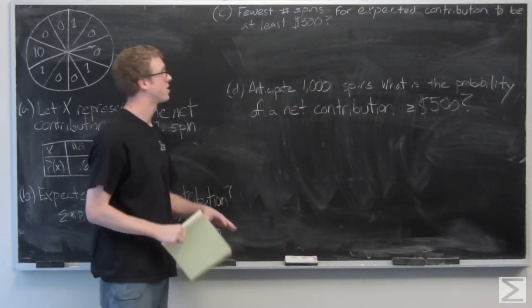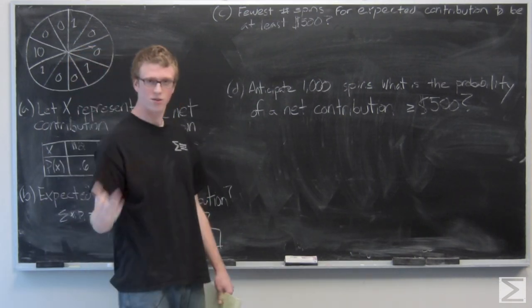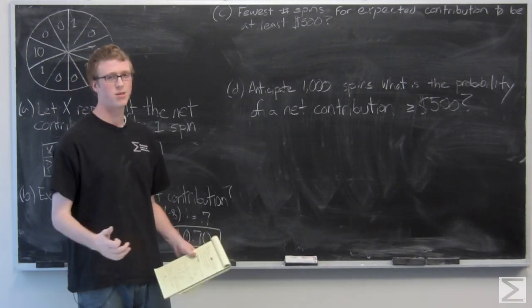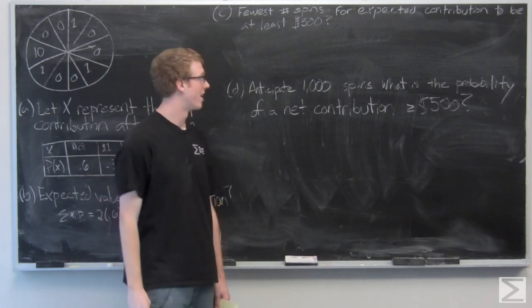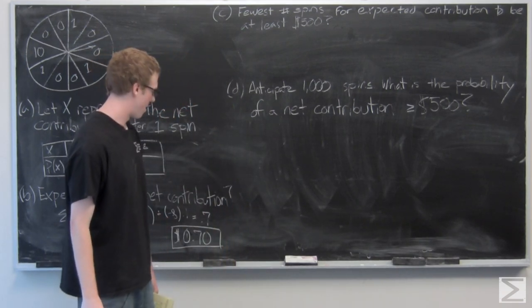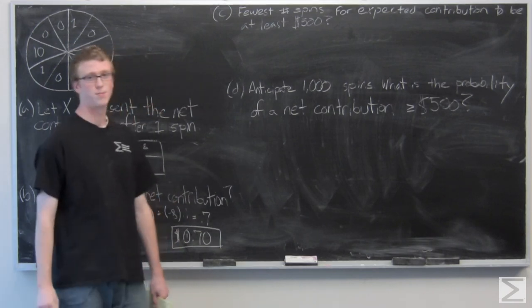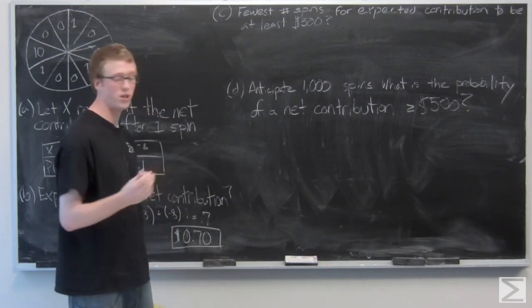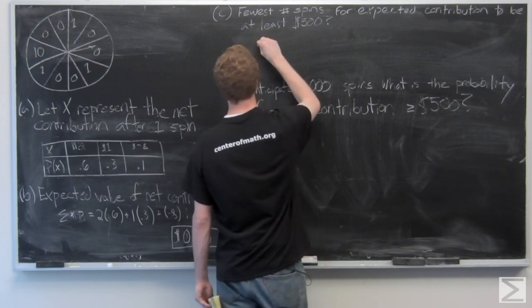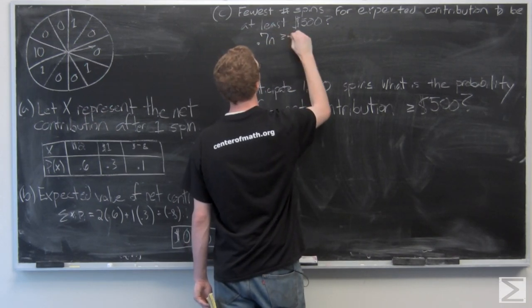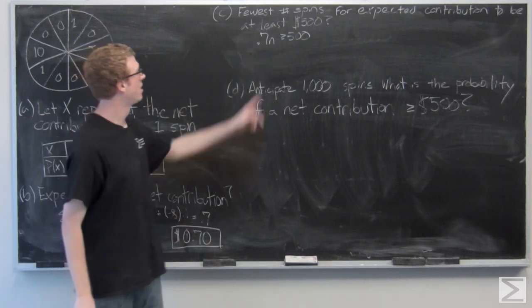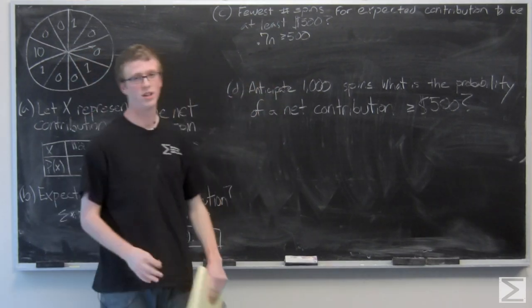So now the question asks us to move on, and the charity is looking for a net contribution of at least $500. So we need to find out the fewest number of spins, the fewest number of times we need people to play this game in order for that contribution to be at least $500. We're going to let n represent the number of spins that we're looking for. We know that each spin is going to be expected to generate 0.7 dollars or 70 cents. So we can set 0.7n greater than or equal to 500, because the expected value of one spin is 0.7. We need n spins to get to greater than or equal to 500.